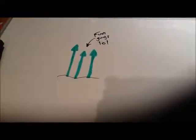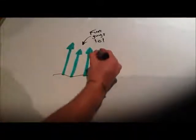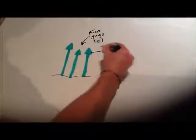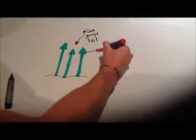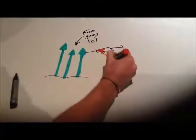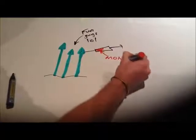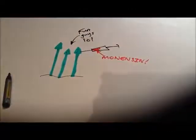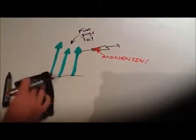Monensin is an antibiotic used in cattle beast production to improve efficiency. It is a by-product from the fermentation of Streptomyces cinnamonensis, a fungi. It is a carboxylic polyester, and as an ionophore, it acts as an ion transporter moving cations across a phospholipid bilayer.